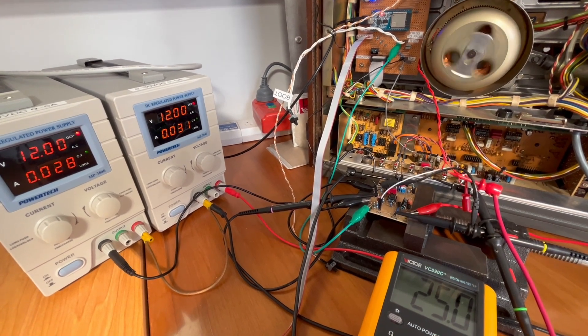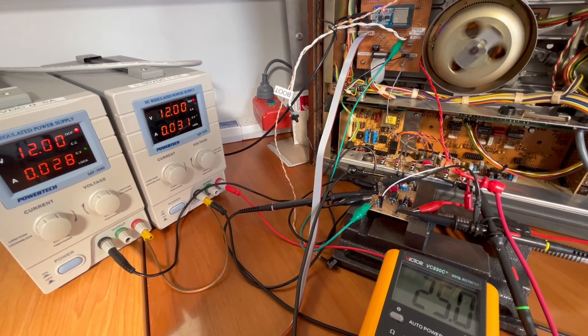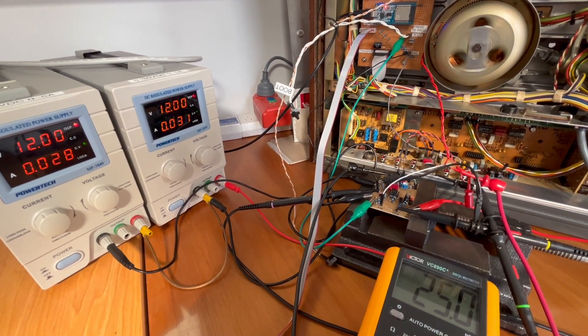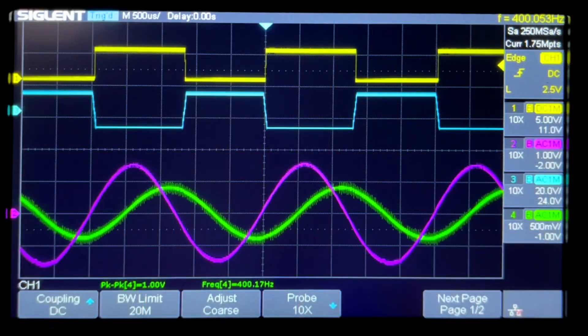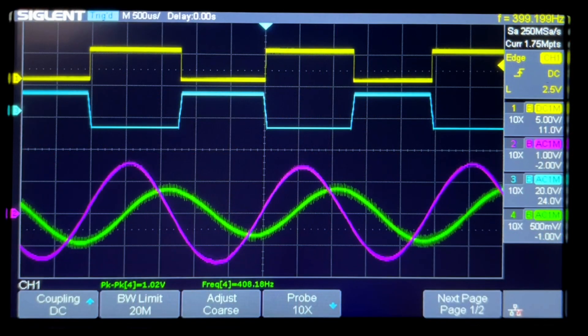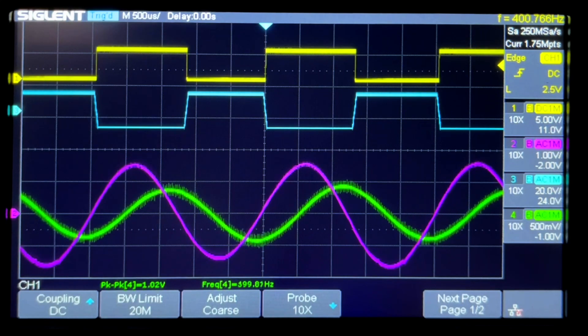Here I am hooked up to the machine now and I'm setting the VR current to 25 milliamps.